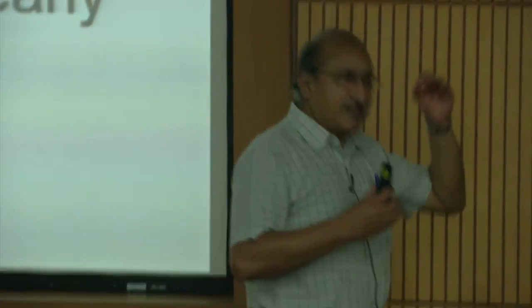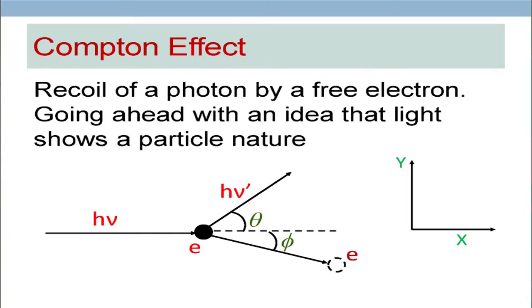The fact that light carries momentum was known much earlier, even before relativity was discovered. But here we are treating it in a particular formalism using special theory of relativity: if it has energy h-nu, it must have a momentum of h-nu over c if this particle has zero rest mass. Fortunately for us, it is the Compton effect which can give this particular information — it can test that the photon really has a momentum of h-nu over c.